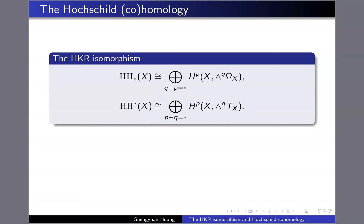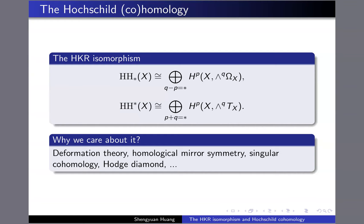We care about the Hochschild homology and cohomology because they have applications in deformation theory and in homological mirror symmetry. As you can see, this thing looks like the Hodge decomposition.